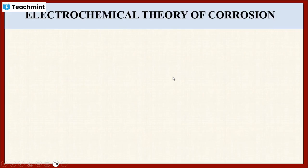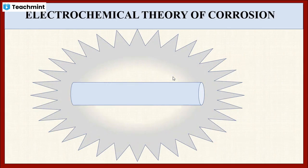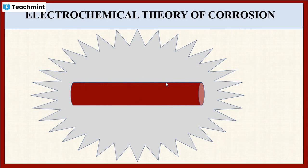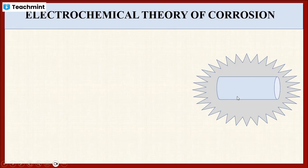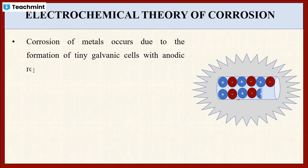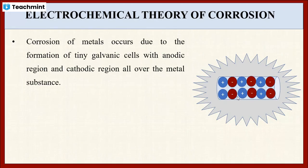Now, let us see about electrochemical theory of corrosion. This theory is applicable only for wet corrosion. So first we will see what is wet corrosion. When a metal is exposed to the environment in the presence of moisture, then corrosion takes place. This process is known as wet corrosion. According to this theory, metal corrosion takes place due to the formation of tiny galvanic cells with cathodic as well as anodic regions all over the metal surface.